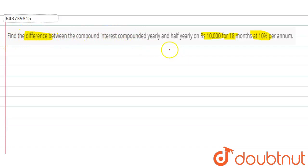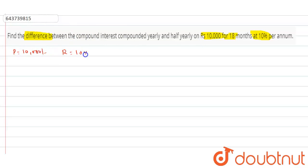In this question, find the difference between the compound interest yearly and half-yearly on rupees 10,000 for 18 months at the rate of 10 percent per annum. The given data is: P is equal to 10,000 rupees, R is equal to 10 percent, and T is equal to 18 months, which equals 3/2 years.